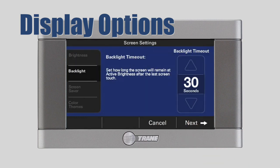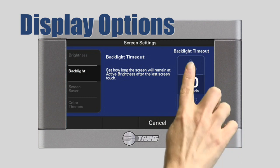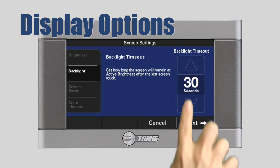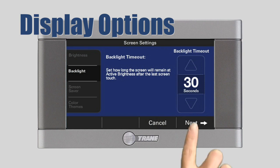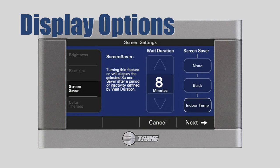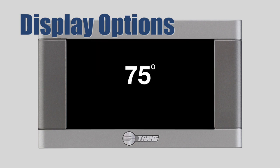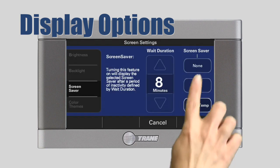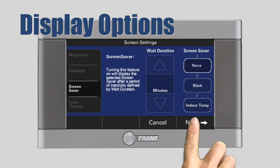Now, let's set the length of time in seconds the screen will remain in the active mode before entering the standby mode after the last screen touch. The default is 30 seconds. Next, we'll set the number of minutes after the last screen touch before the screensaver starts, and you'll choose if you want the screen to go blank or display the indoor temperature. If you select None, the screensaver will not activate.